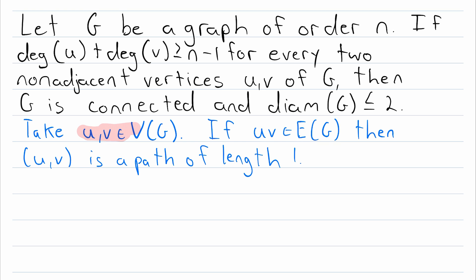So if those two vertices U, V are joined by an edge, then clearly they are connected, and U, V is a path that connects them with length 1.